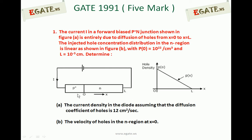Determine: A) the current density in the diode assuming that the diffusion coefficient of holes is 12 centimeter square per second; and B) the velocity of holes in the N region at X equal to 0.